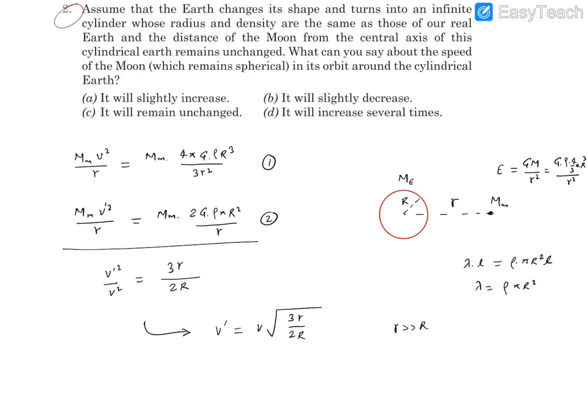Question number 2. It says we are assuming that Earth changes its shape and from sphere it converts into an infinite cylinder keeping same radius, same density, and the distance of moon from the central axis also remains unchanged. These are the conditions it is providing.